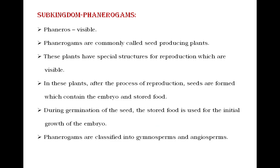Firstly, we will see the general characteristics of sub-kingdom Phanerogams. The word 'phaneros' means visible — those plants whose reproductive structures are visible are called Phanerogams. These are commonly called seed-producing plants. Along with seeds, fruit-bearing plants are also called Phanerogams.